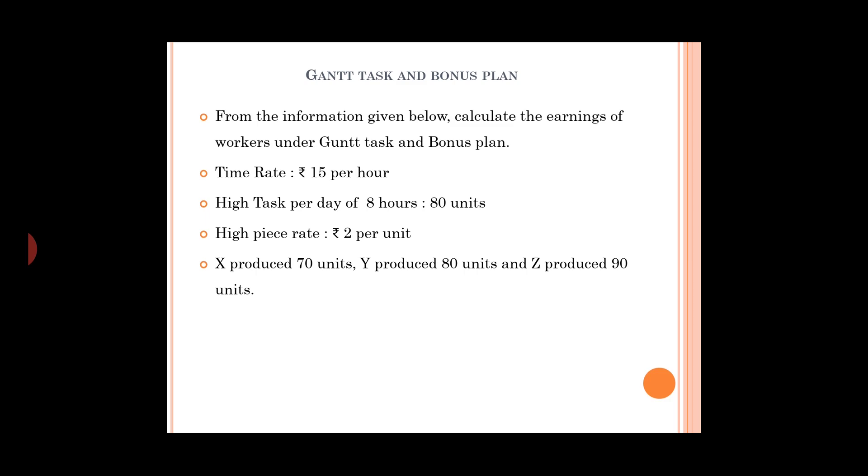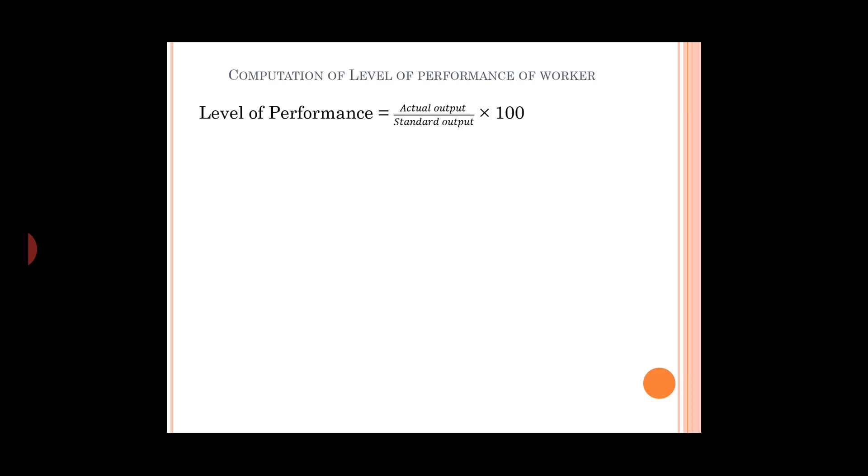The time rate is 15 per hour. High task per day of 8 hours is 80 units, the standard output. High pace rate is 2 per unit. The level of performance equals actual output divided by standard output into 100. X equals 70 divided by 80 into 100 equals 87%, Y is 80 divided by 80 into 100 equals 100% efficiency, Z is 90 divided by 80 into 100 equals 112.5% efficiency.